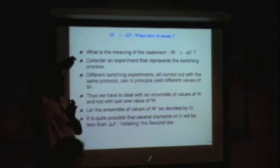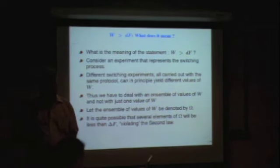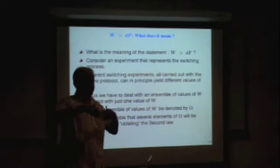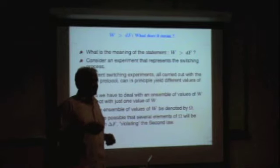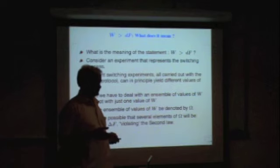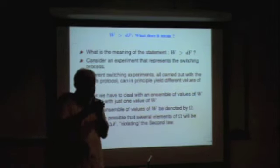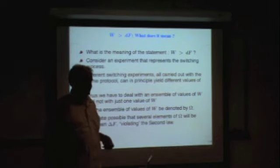During the process the system is always in contact with the heat bath. System exchanges energy with the heat bath. It gives energy to the heat bath or takes energy from the heat bath. This is happening all the time, randomly. A random process can never be reversed. If you do it very slowly, then at every stage the system is in equilibrium with the heat bath and hence equilibrium work done is equal to the change in the free energy.